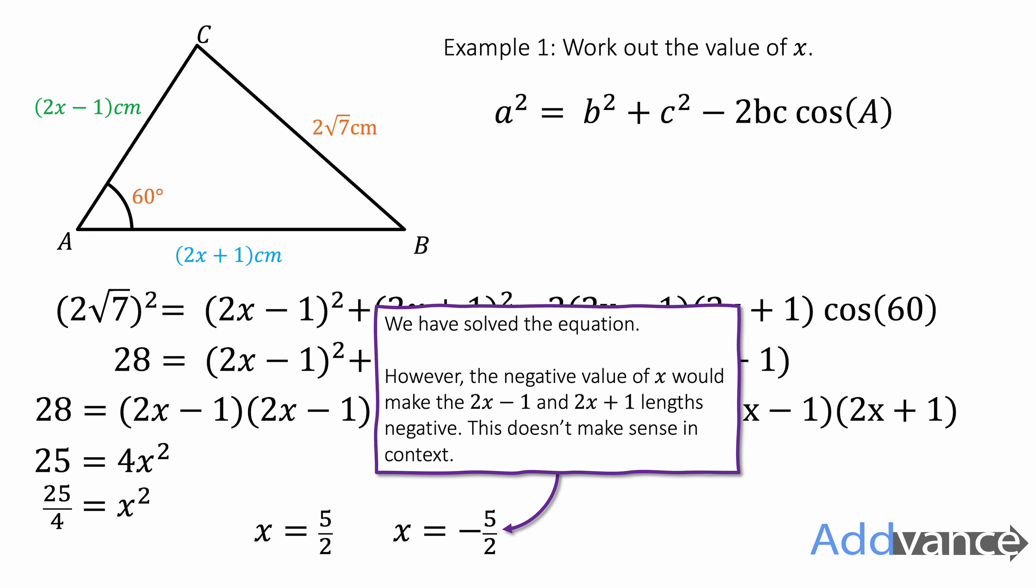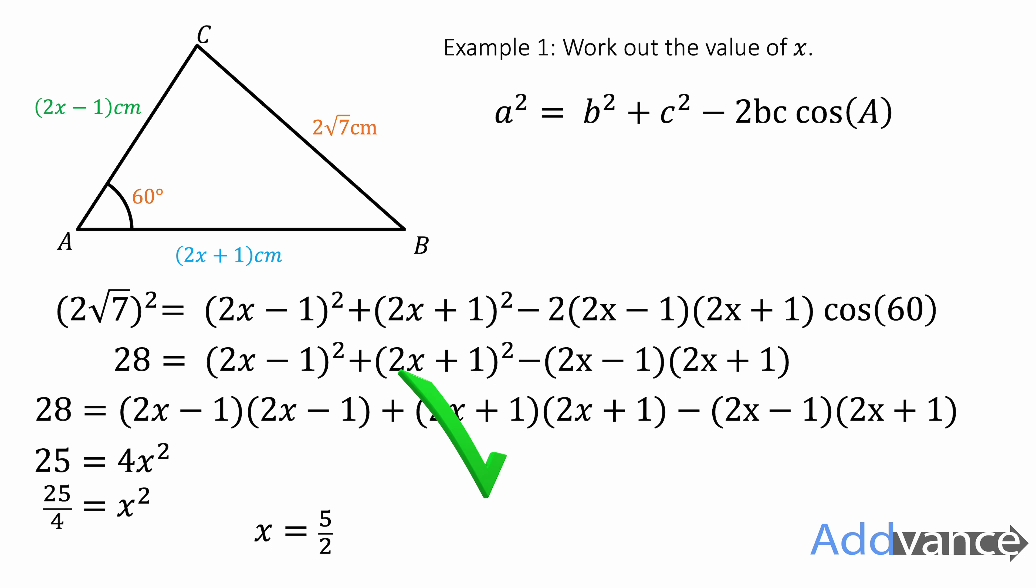x is either 5 over 2 or x is minus 5 over 2. However, in the context of the original question, the negative x would give a negative length. So the value of 2x minus 1 or 2x plus 1, if x was minus 5 over 2, would be a negative number. And negative lengths make no sense. So we're going to ignore that answer and only use the positive value as the correct answer. That's quite a common thing in exam questions. When you get a quadratic or you get 2 answers, you have to choose the sensible answer from the context of the question.